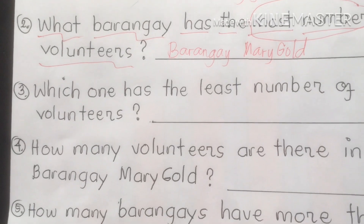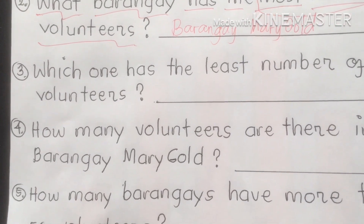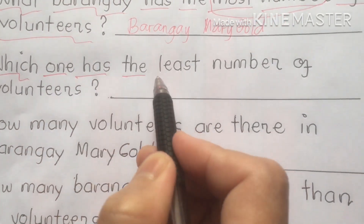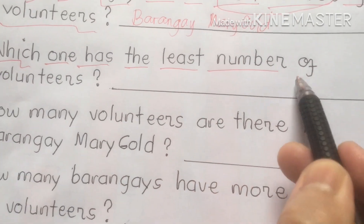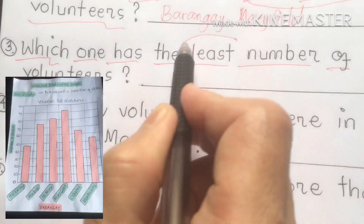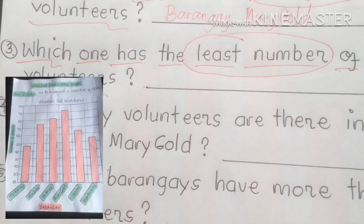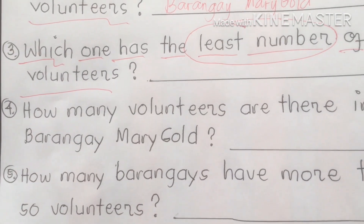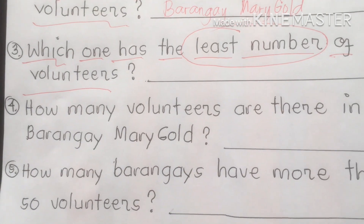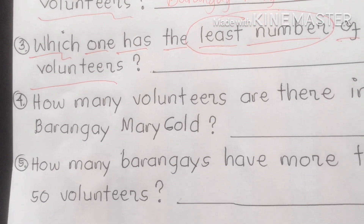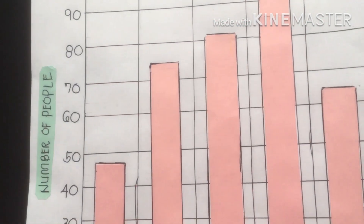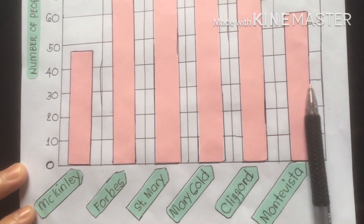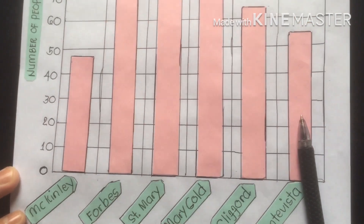Number three: which one has the least number of volunteers? When we say least, that means the lowest number among the people who volunteered as poll watchers. Let us check the bar graph.